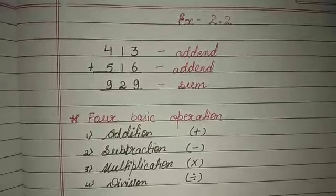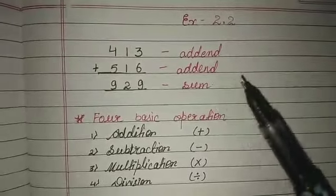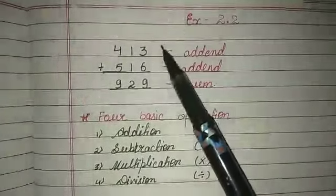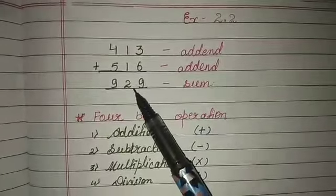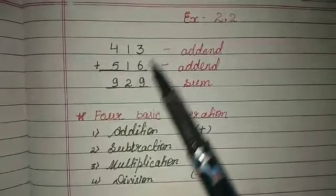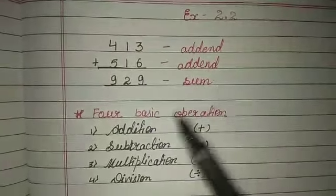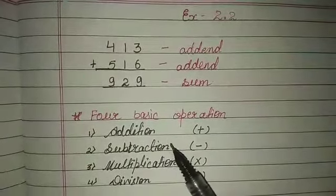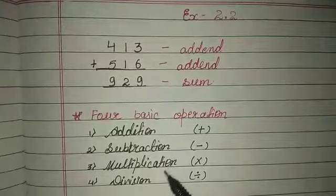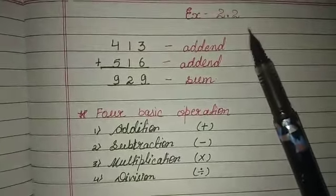Hello students, today we will be starting with the second chapter, that is 2.2. We already know that the numbers we add are called addends, and the answer we get after adding is called the sum. There are four basic operations: addition, subtraction, multiplication, and division. In this exercise, we will be dealing with addition.